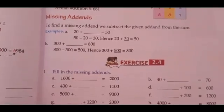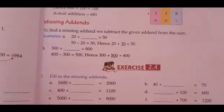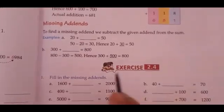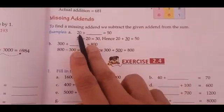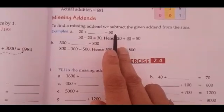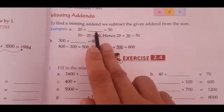Students, today we are going to learn how to find the missing addends. If you see an example here, it is given 20 plus blank equals 50, so we have to find this missing addend.